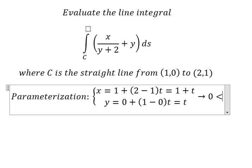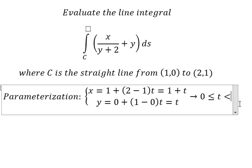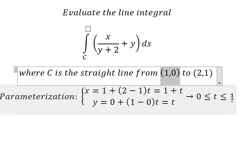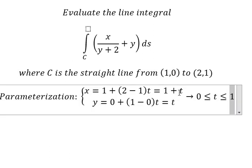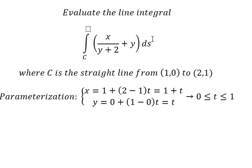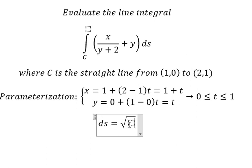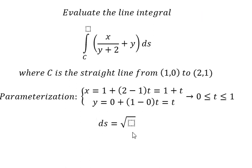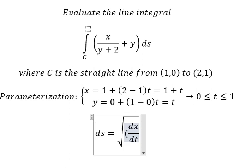We can see that the bounds of t should be from zero to number one — because if I put t equals zero here and here, that gives us the starting point, and if I put t equals one here, we get the point (2, 1). Next, the arc length element ds should be the square root, and we need dx over dt.